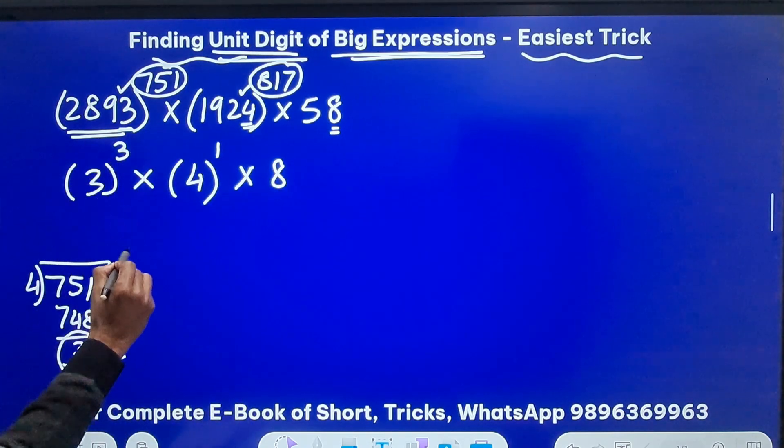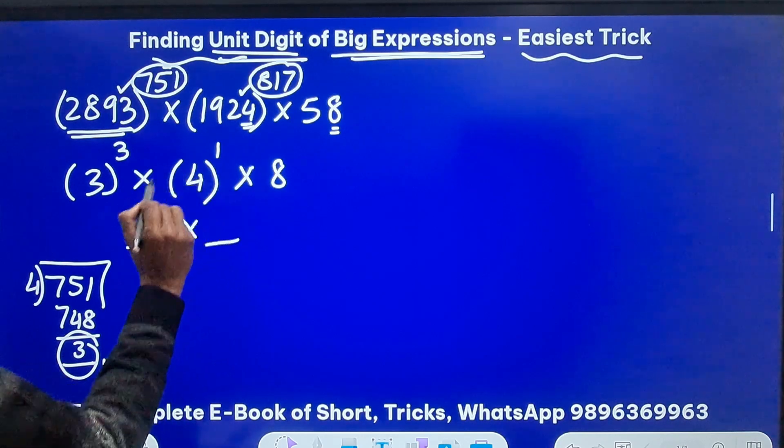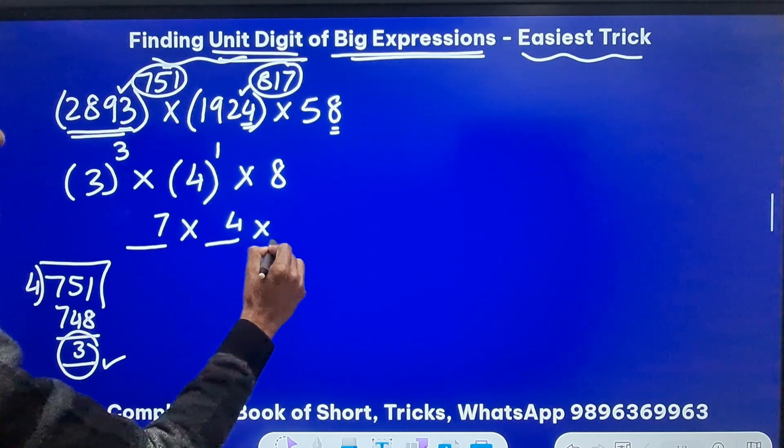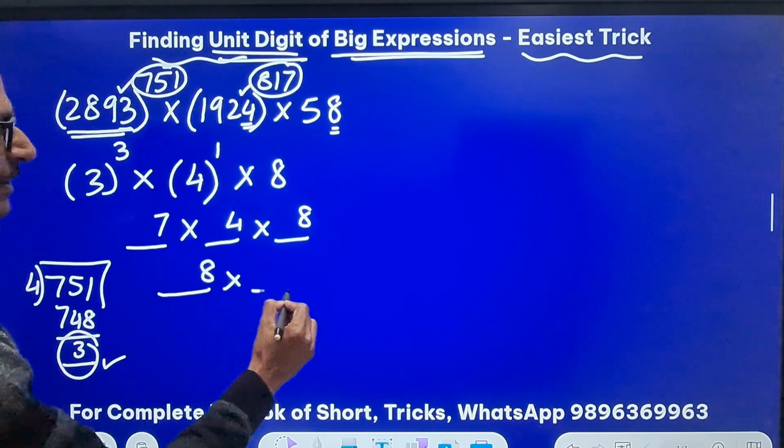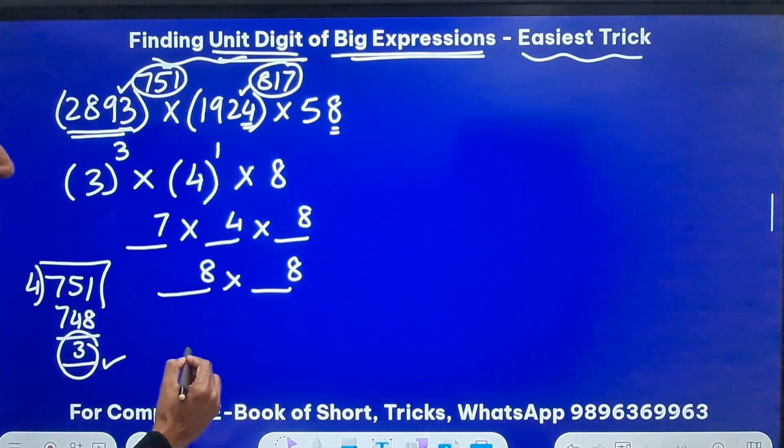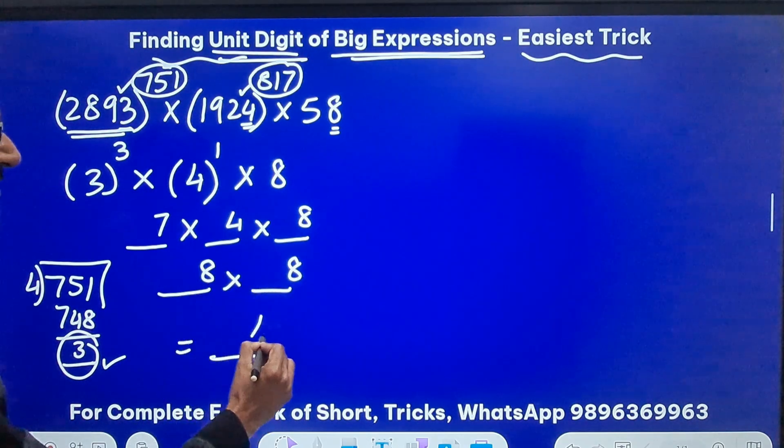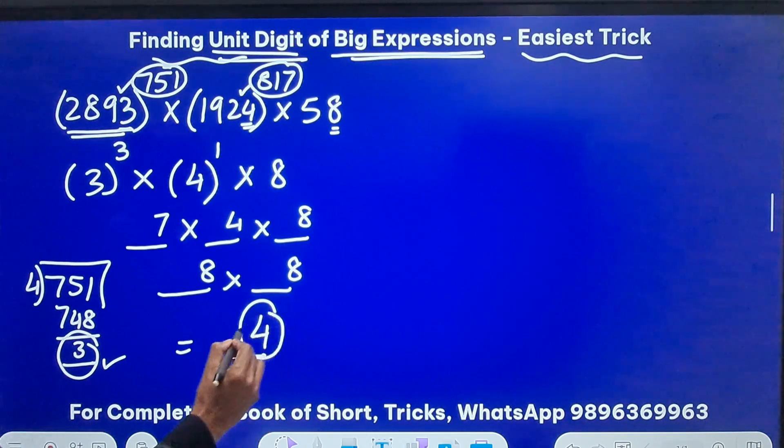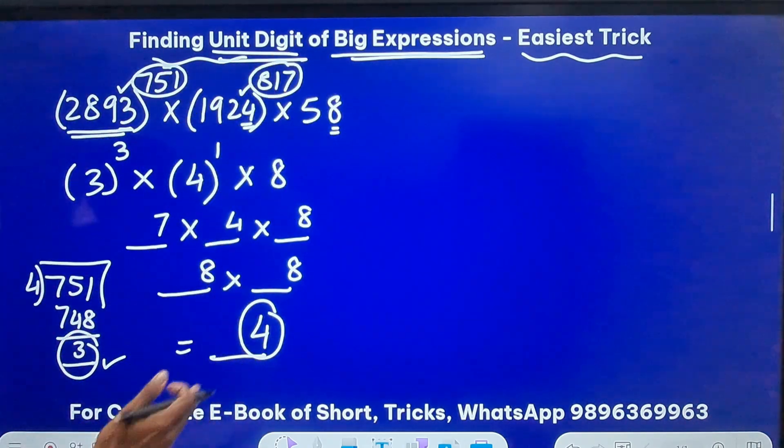3 cube happens to be 27 that ends in 7 and this ends in 4 and this ends in 8. So 7 times 4 is 28 that ends in 8 and again a number ending in 8 so your answer for the question will be 8 times 8 ends in 64 that ends in 4. The solution is the unit digit of this big calculation is going to be 4.